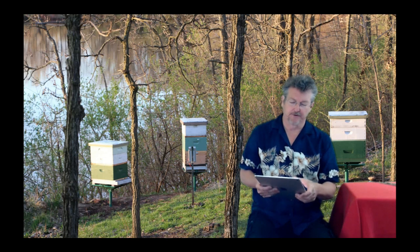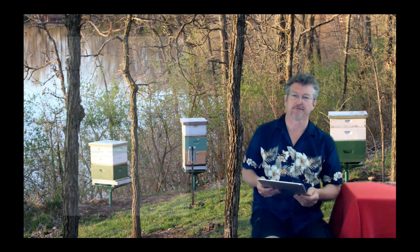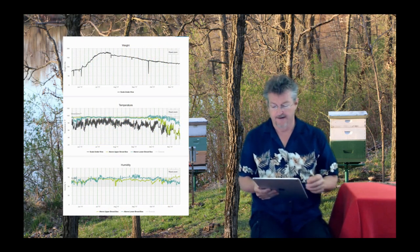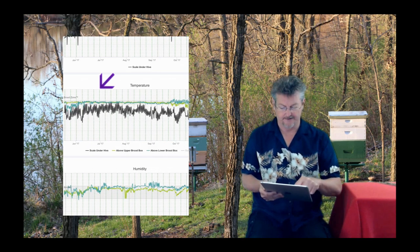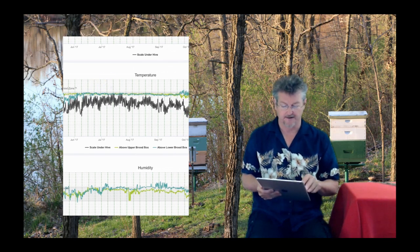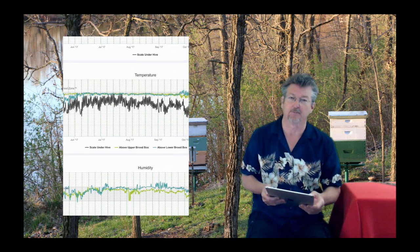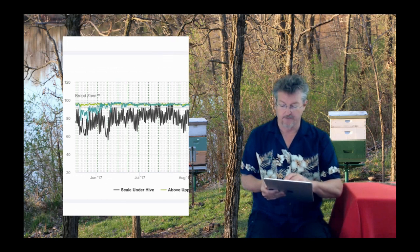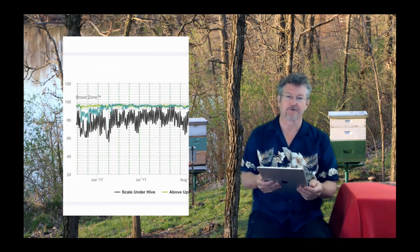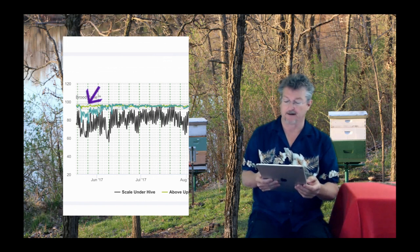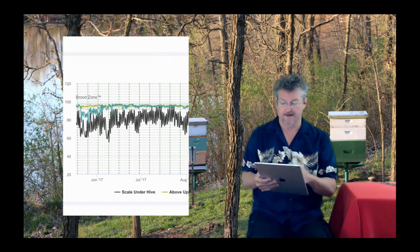Now what we want to do is look at some of the graphs that you might get. Here's one of a hive in Virginia and you can see how the colors of the graph are above the lower brood box and upper brood box. When we zoom in here, we see that there's really good regulation in the upper brood box.